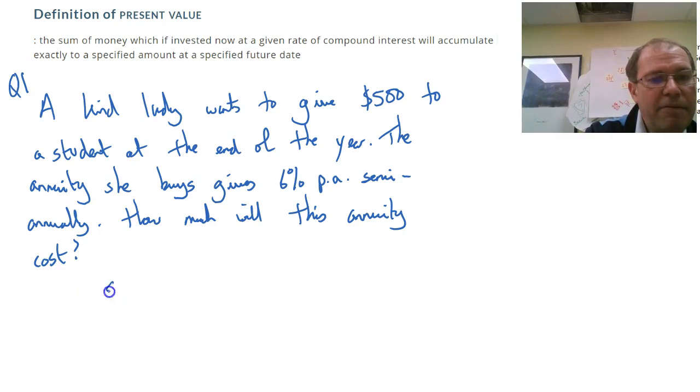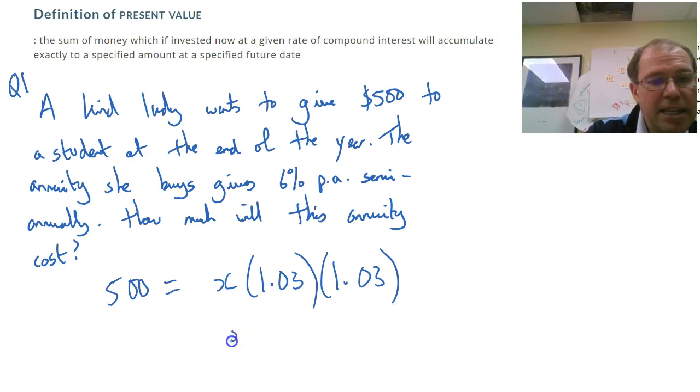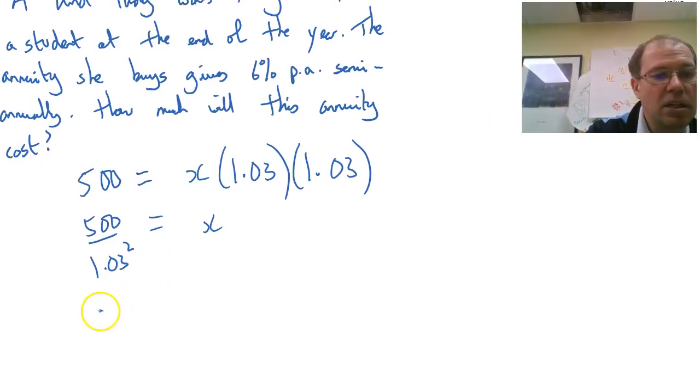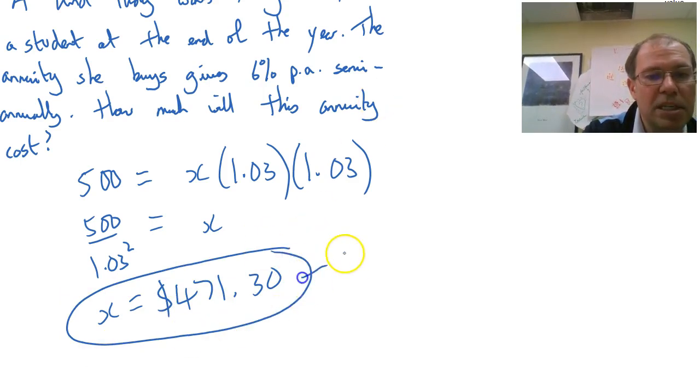Imagine we have $500 at the end and my original amount is X, and I want to compound that by 3%. So I multiply it by 1.03 and compound it by 3% again, another 1.03. To solve for X, I need to divide 500 by 1.03 squared and that comes out as the annuity cost, the present value of that annuity would be $471.30.